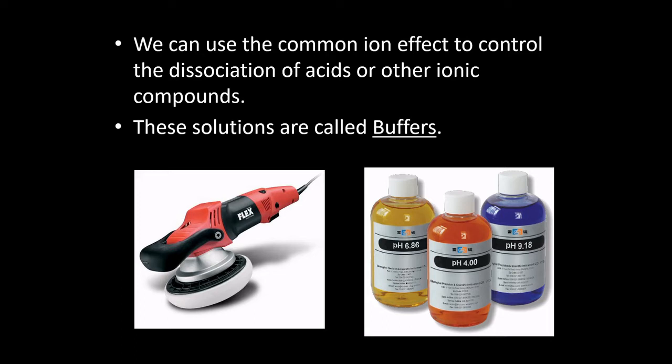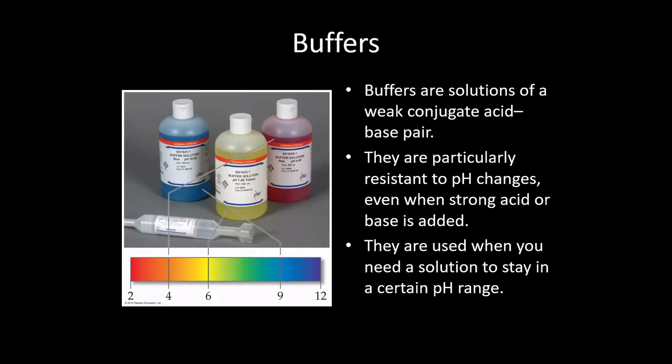What a buffer does is it uses the common ion effect to hold the pH within a certain range to a certain extent. There is no perfect buffer out there. Even when you add a small amount of acid or base to a buffer, the pH does change slightly, but not nearly as much as it would without the buffer being present.